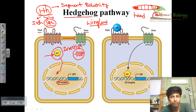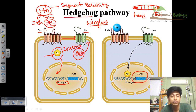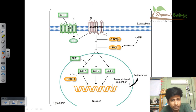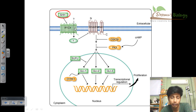When hedgehog binds Patch, the vesicle containing Smoothen fuses with the membrane, embedding Smoothen into the membrane. Smoothen then activates the GLI proteins, which enter the nucleus and turn on the GLI target genes, ultimately helping cells develop different organs properly. Patch activity is regulated by SHH, which inhibits Patch and blocks it from binding any hedgehog signaling molecule.